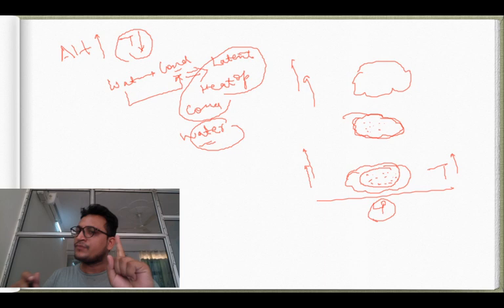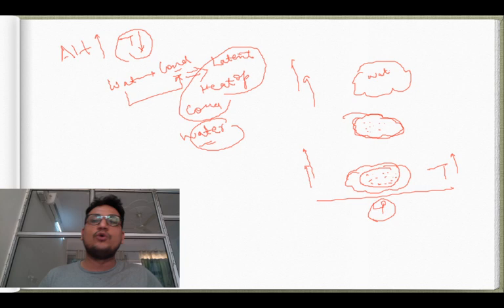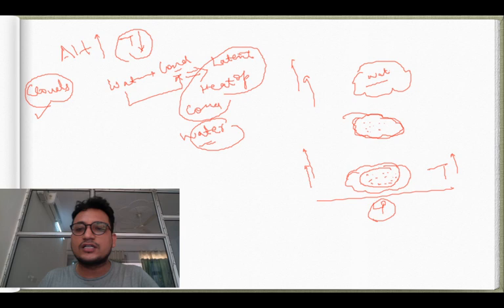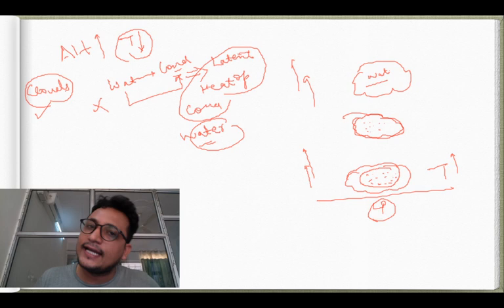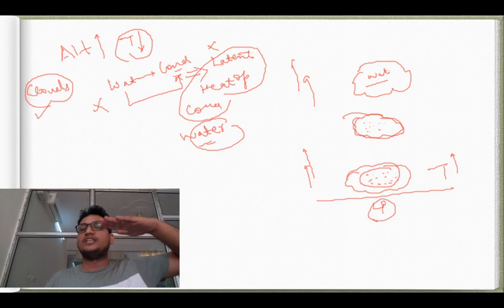The air parcel will keep rising until all the water vapor molecules inside have condensed and formed clouds. Once all water vapor has condensed and cloud formation is complete, there is no more water vapor inside, so no more latent heat of condensation is released, no more heat, and the parcel starts feeling slightly heavier than its surroundings and stops rising.